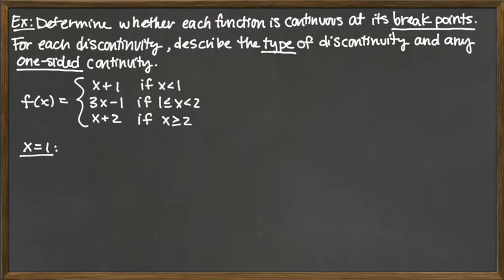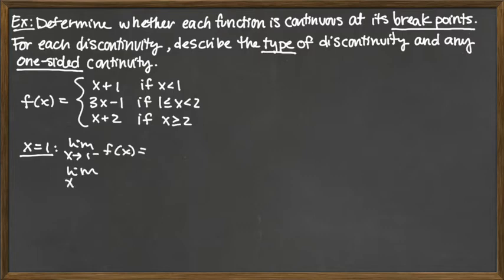Let's look at what's happening at x equals 1. To determine whether the function is continuous or not, we need to assess three things: the left-hand limit as x approaches 1 from the left, the right-hand limit as x approaches 1 from the positive side, and the function value at 1. Those three things, depending on what they are, allow us to make our conclusions.